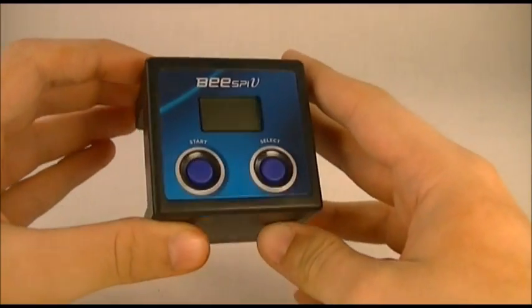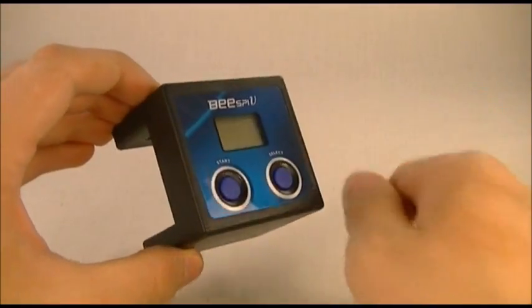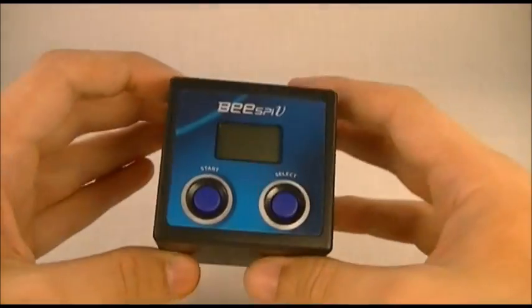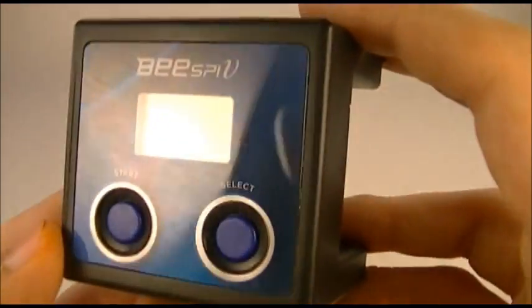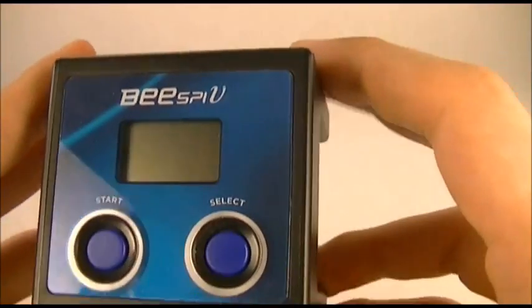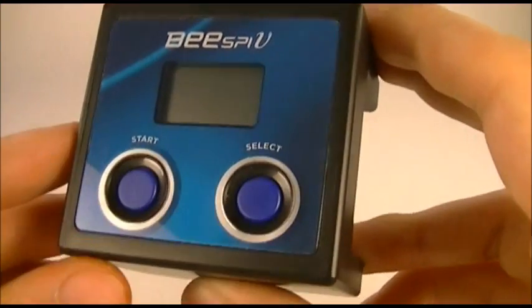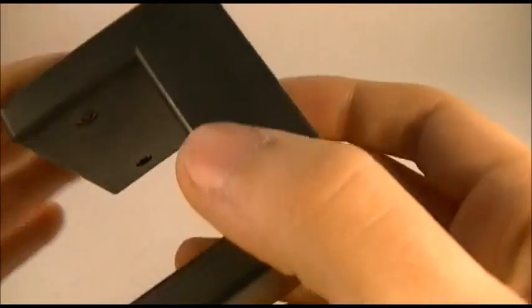And here is the Beast BV photogate itself. Now it comes with a little piece of film on the top that you have to peel off just to keep it safe. But it's very, very shiny. As you can see Beast BV. It's got a little LCD screen there. Start button, select button. Very, very simple.